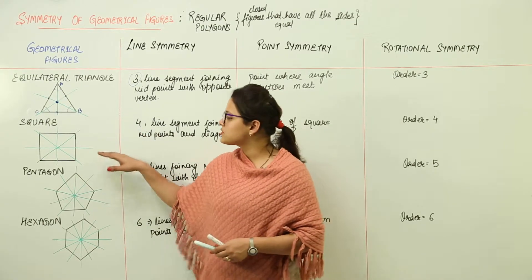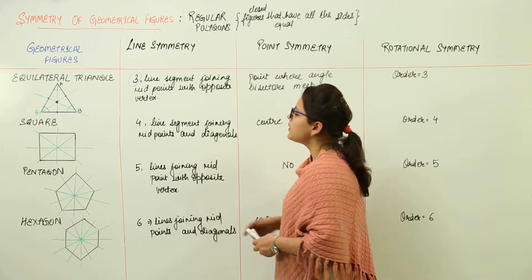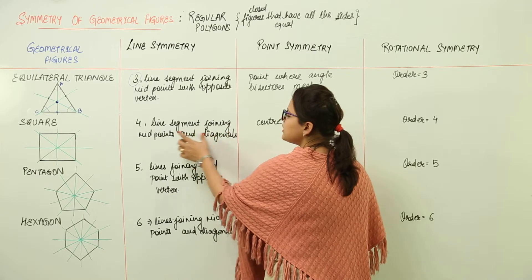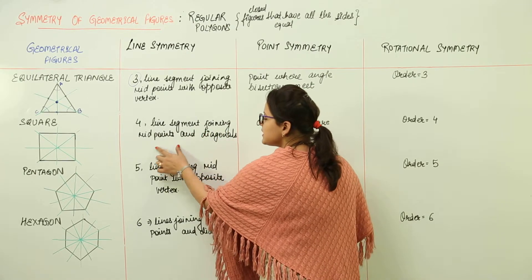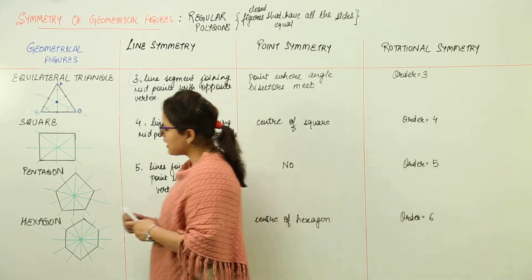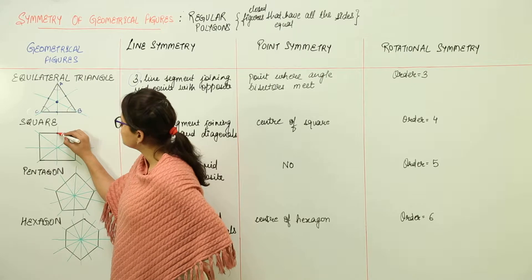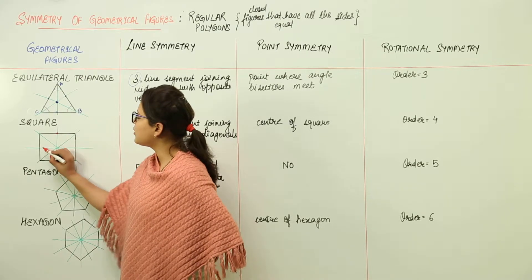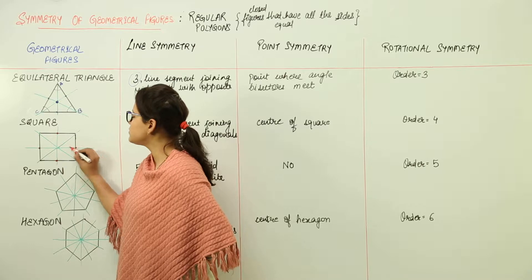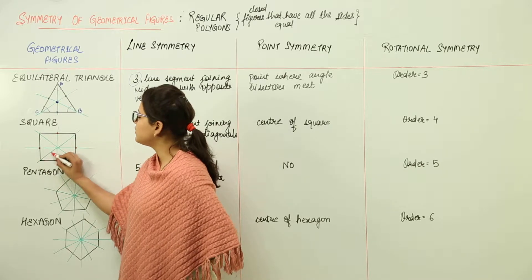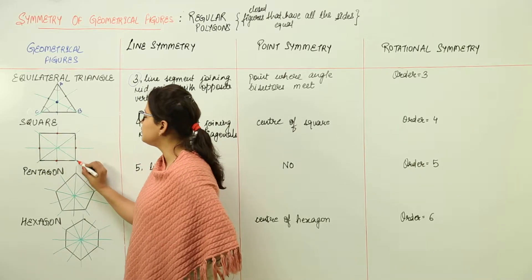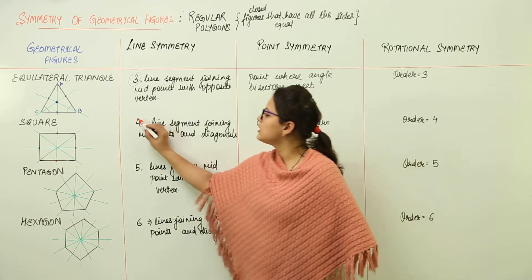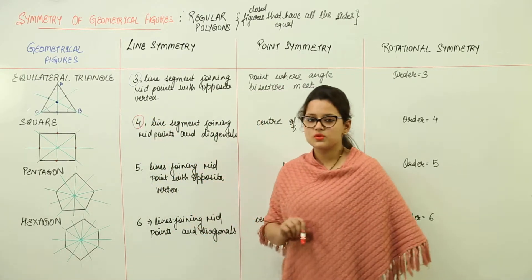Next we have the square. The square has 4 lines of symmetry — the line segments joining the midpoints and the diagonals. Here we have the midpoints, one line segment joining a midpoint and another line segment joining a midpoint, plus diagonal 1 and diagonal 2. So in total we have 4 lines of symmetry for the square.